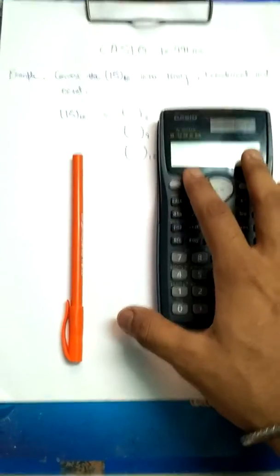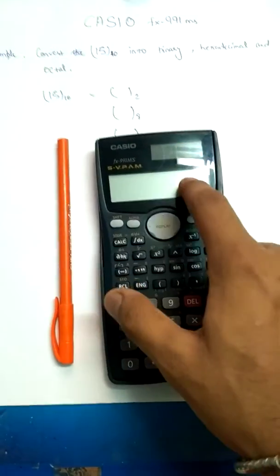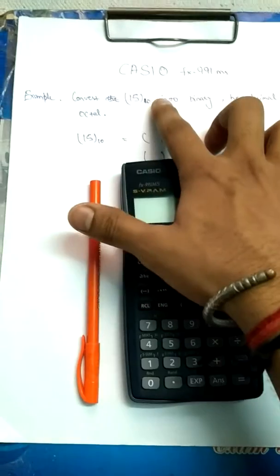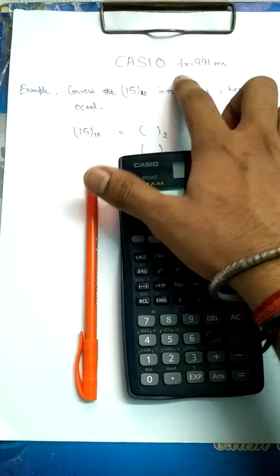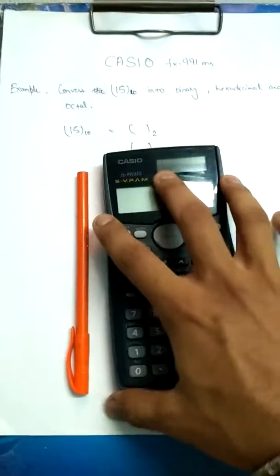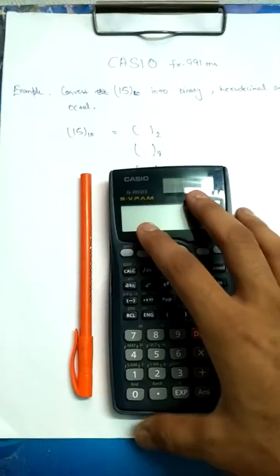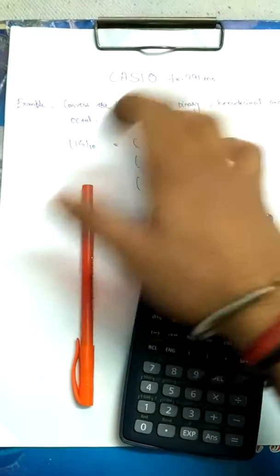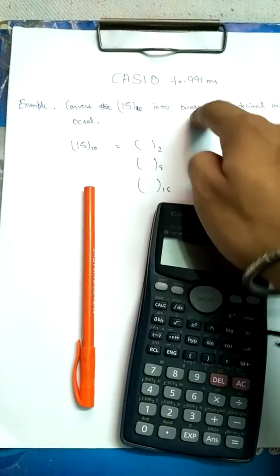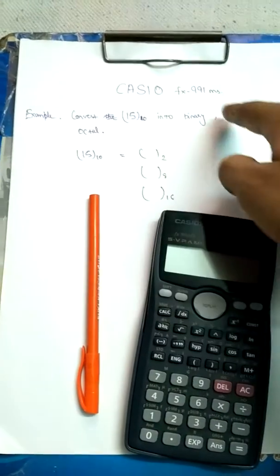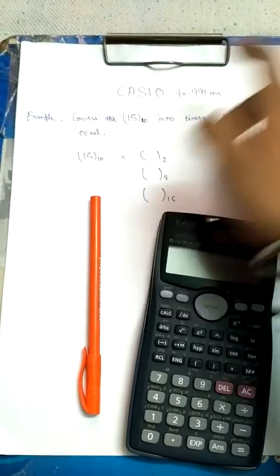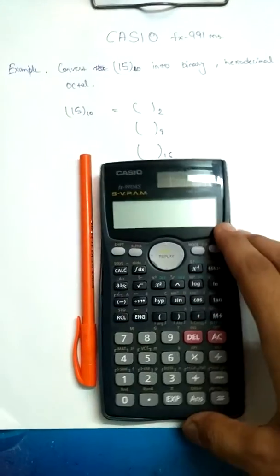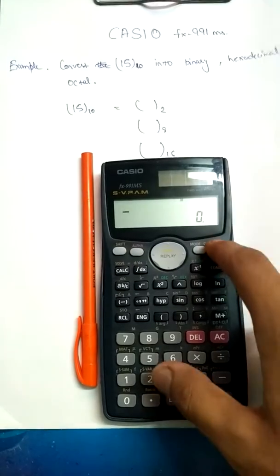Hello guys, we are back with another tutorial of this scientific calculator. I am using the FX991MS, and today I am going to show you how to convert a decimal number into binary, hexadecimal, and octal — or binary into decimal, hexadecimal into binary or octal, or any of these four.